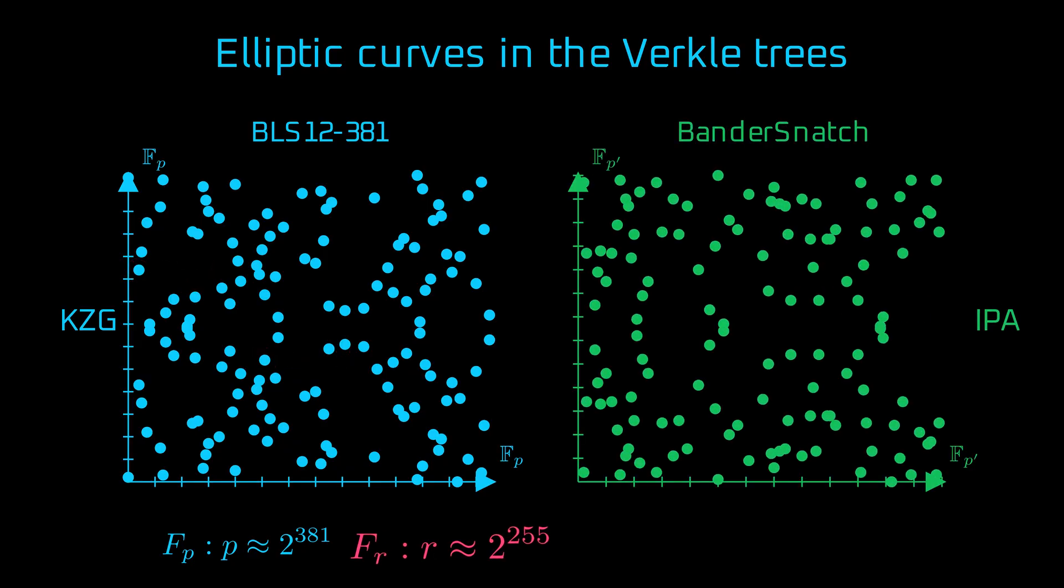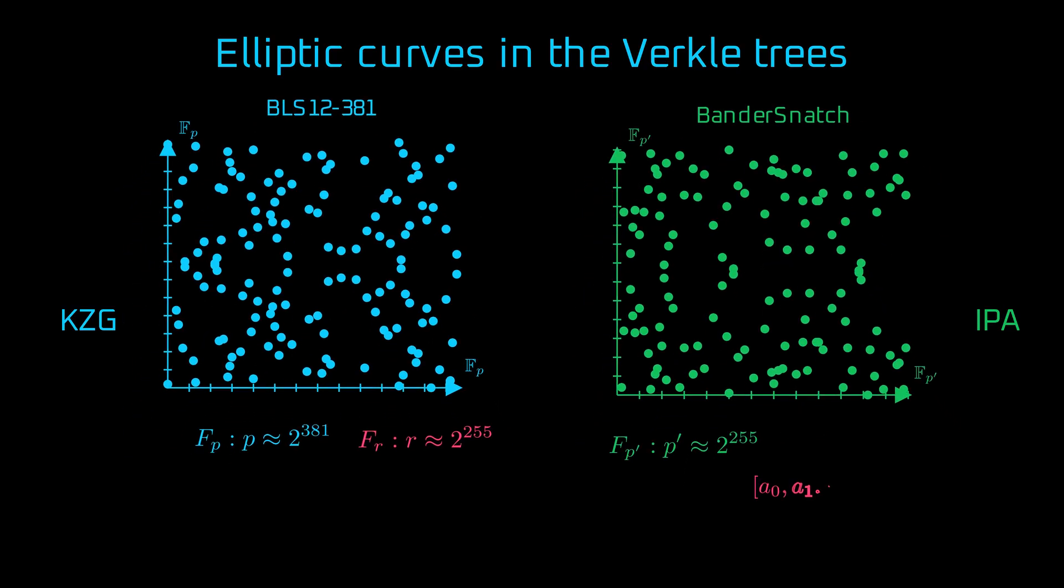This curve is defined over a BLS12381 scalar field. That means the base field for Bandersnatch is smaller compared to BLS12381's Fp. That makes its curve points much lighter, as they weigh just under 32 bytes. Scalars, which are used for the vector values we commit to, belong to the Bandersnatch scalar field, which is up to almost 253-bit field. So the scalars also remain under 32 bytes.